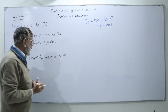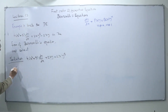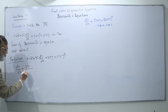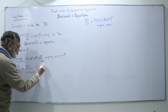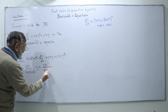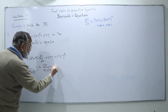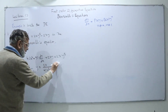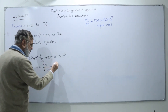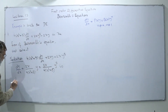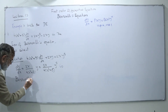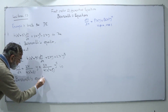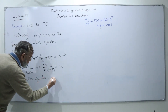Next, we want to make this coefficient 1, so we divide by 4x² + 5. We get dy/dx plus 2x/(4x² + 5) · y equals 2x/(4x² + 5) · y⁵. This is a Bernoulli equation, and we can see that n is equal to 5.